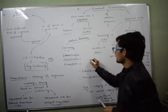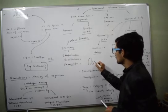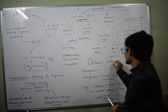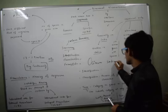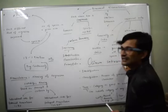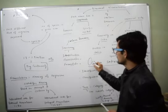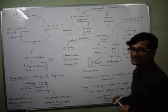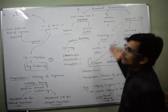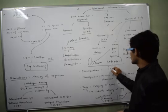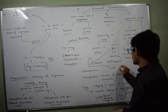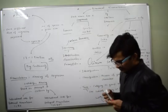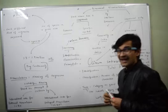Let me give you an example of binomial nomenclature. A very common example for Indians is Ocimum sanctum — the scientific name of Tulsi. Here 'Ocimum' denotes the genus and 'sanctum' denotes the species name. Together they form the binomial nomenclature. We will discuss more examples in the next classes. Thank you for listening, have a good day.